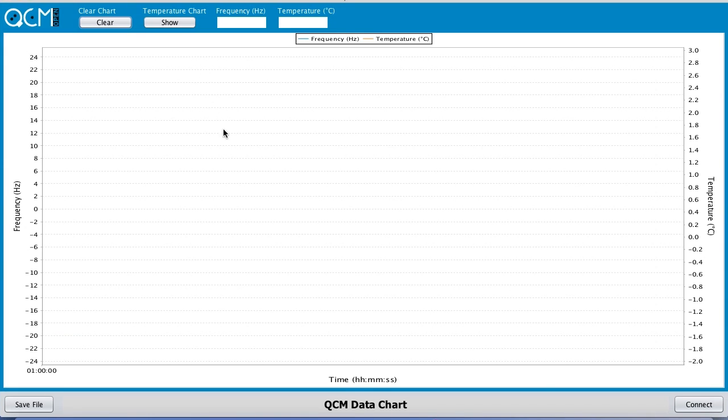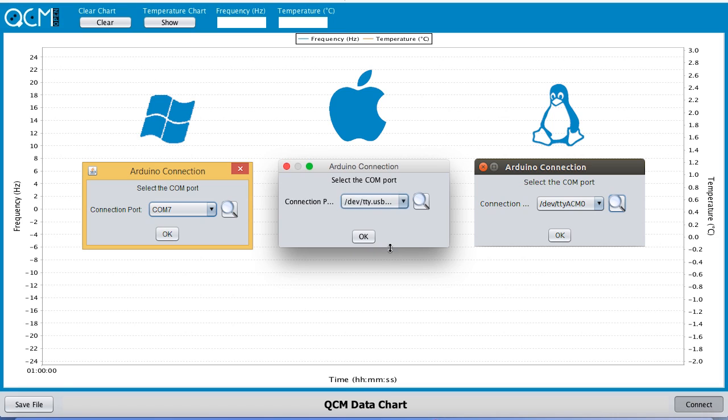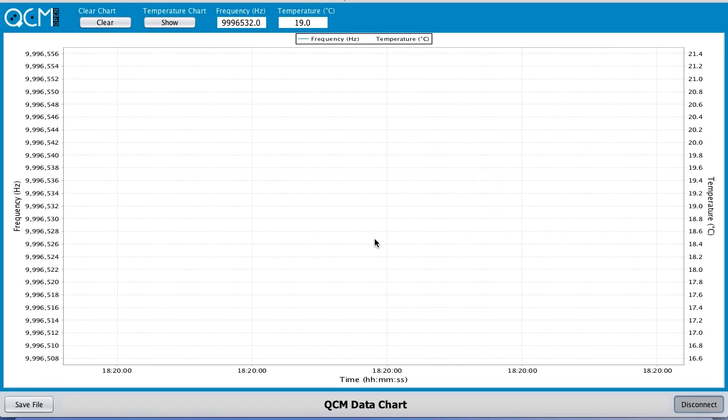Press the connect button. A pop-up window will be displayed. Find and select the correct COM port. The port name depends on your operating system. Press OK to connect OpenQCM.